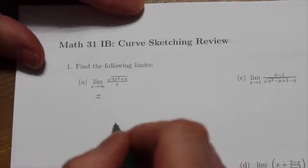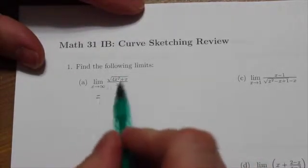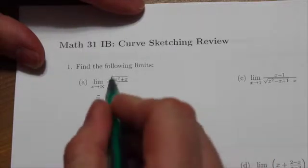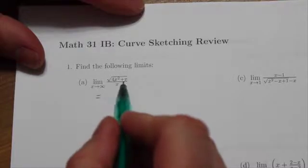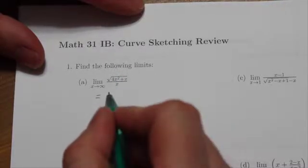So, as we let x go off to infinity in the numerator, what's going to end up happening is the 4x squared term is going to dominate this expression.